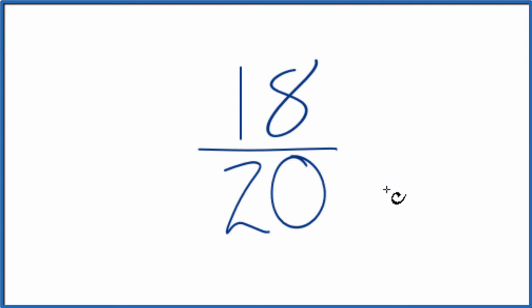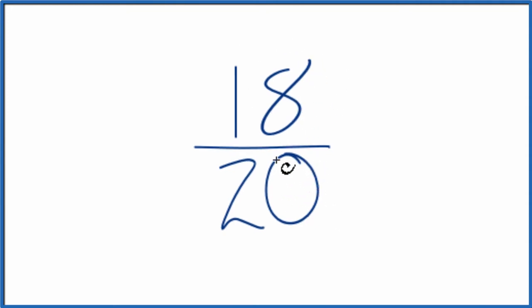To do that, we need to find a common factor, something that goes into 18 and 20 evenly. So let's write the factors for 18 and then 20.